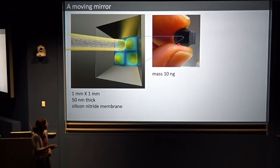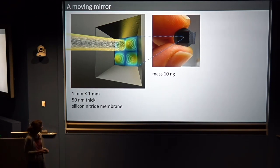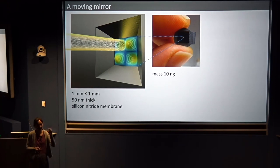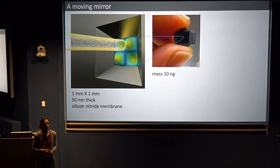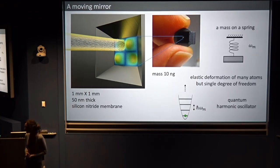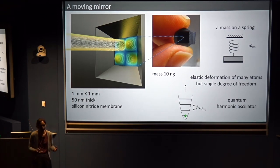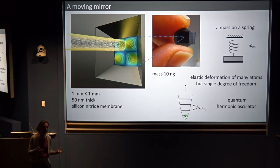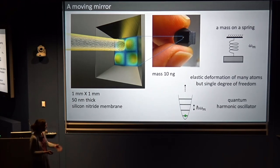What it is is a tiny piece of dielectric stretched across a silicon frame. The material is silicon nitride and it forms a drum-like structure that we call a membrane — about a millimeter by a millimeter in size, so you can hold it and see it reflecting with your eye. It's about 50 nanometers thick and has a mass of about 10 nanograms. For the purpose of this talk, you can think of this as a mass on a spring — an elastic deformation of many atoms, really just that single degree of freedom. You can think of this as a quantum harmonic oscillator with an oscillator frequency omega.